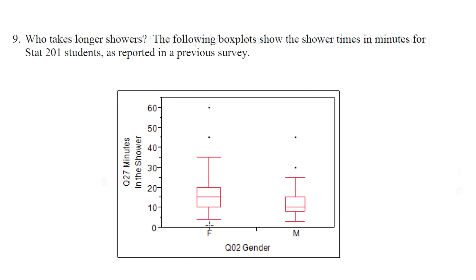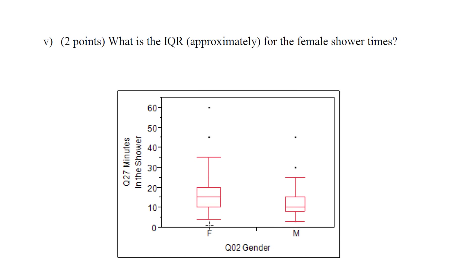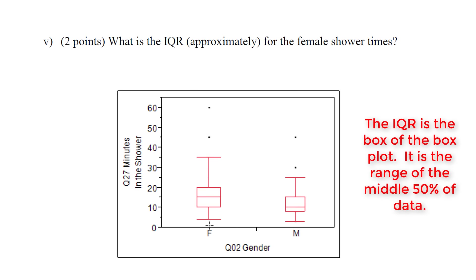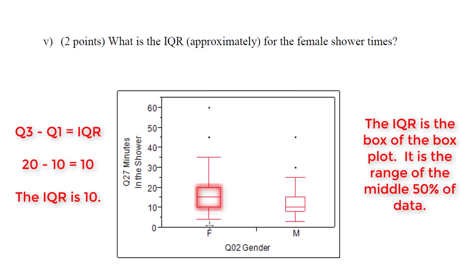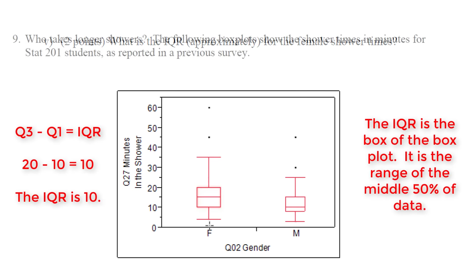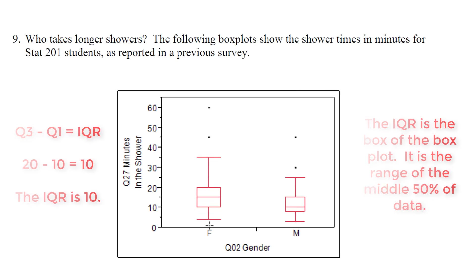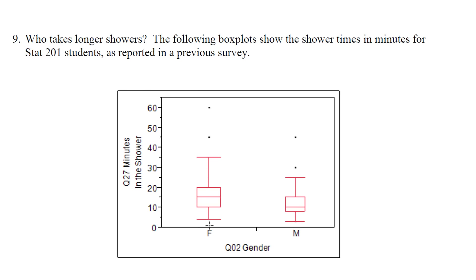The final question asks us to find the IQR for females. To find the IQR, we need to find the distance between Q1 and Q3. The IQR is the box of the box plot. Going from Q1 to Q3 for females, we have a distance from 10 to 20, so the equation is 20 minus 10, which equals 10. The IQR for females is 10.